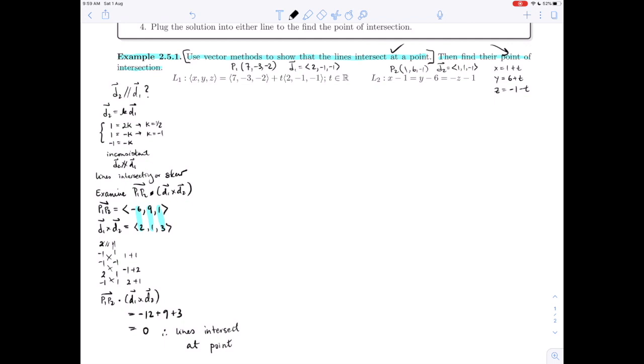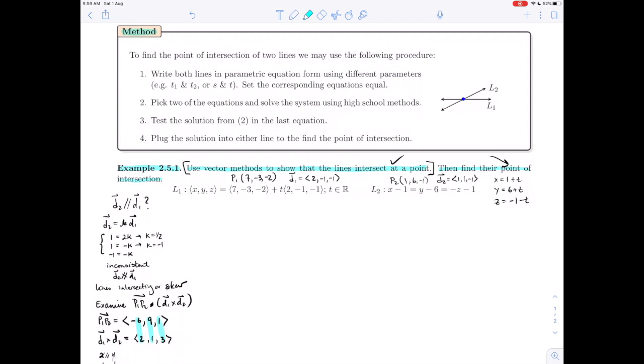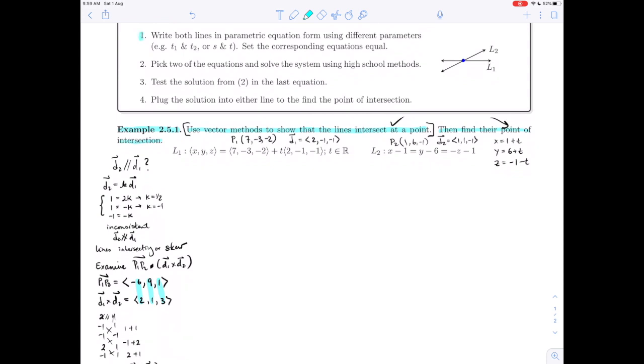We are going to apply the method that's outlined on the page. To find the point of intersection of two lines, we may use the following procedure. Let's go through this step by step. Part one: write both lines in parametric equation form using different parameters, either t₁ and t₂, or s and t, and set corresponding equations equal. The first part here, we've done line two. Let's put line one in parametric form.